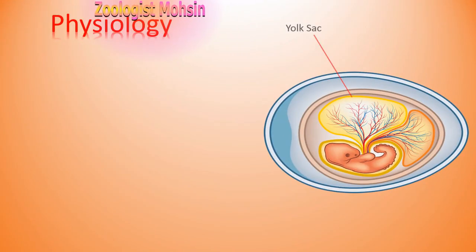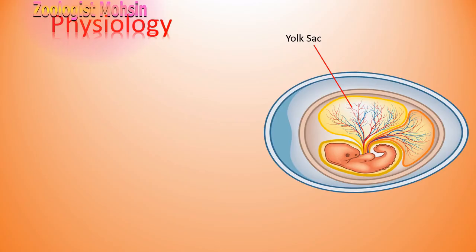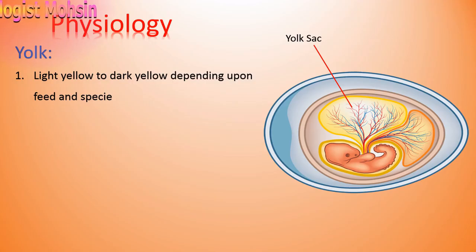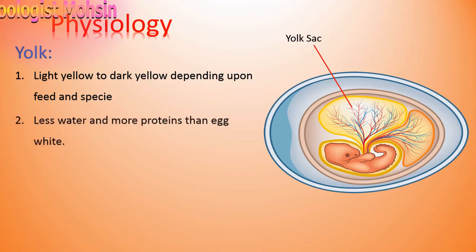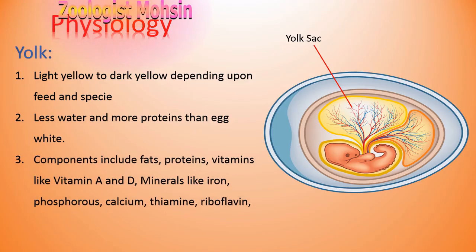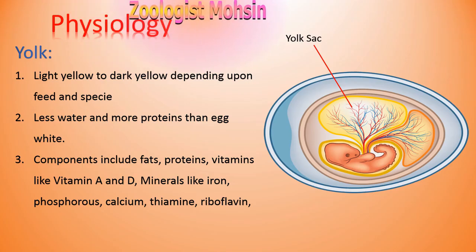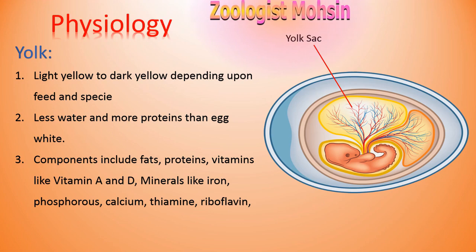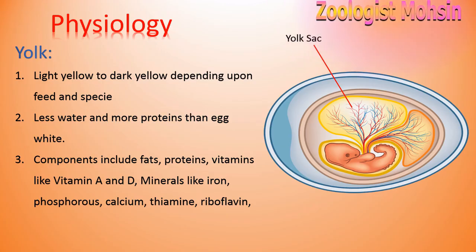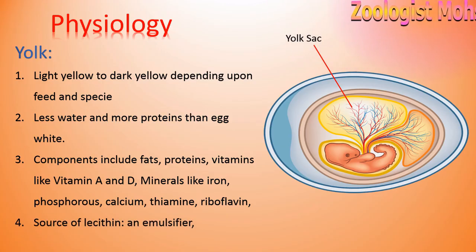The next structure is the yolk sac. The yolk color ranges from light yellow to dark yellow depending on feed and species, and may be dark brown. It has less water and more proteins than egg white. Components of yolk include fats, proteins, vitamins like vitamin A and D, minerals like iron, phosphorus, calcium, thiamine, and riboflavin. It is also a source of lecithin, an emulsifier of lipids.